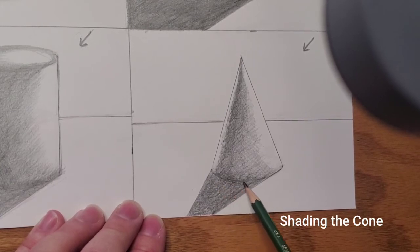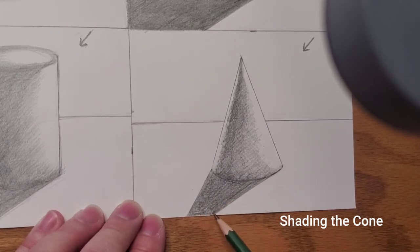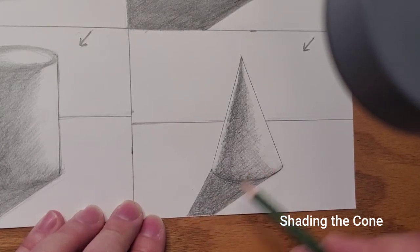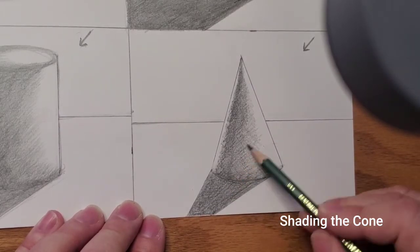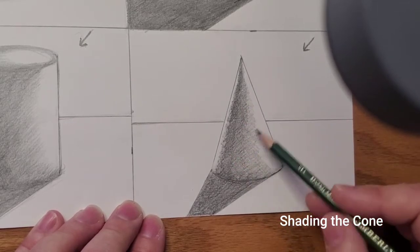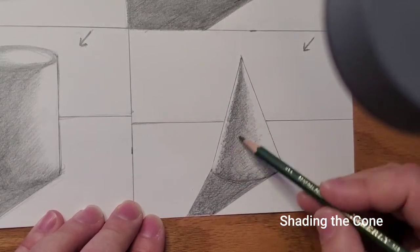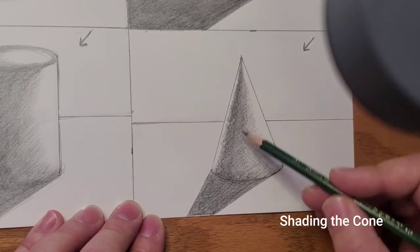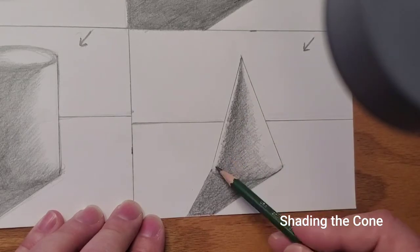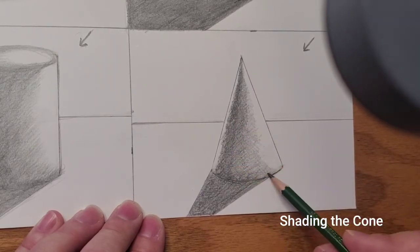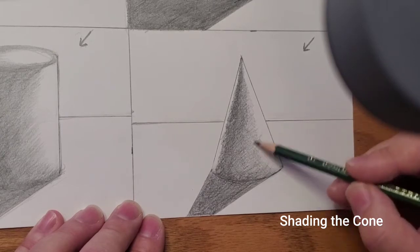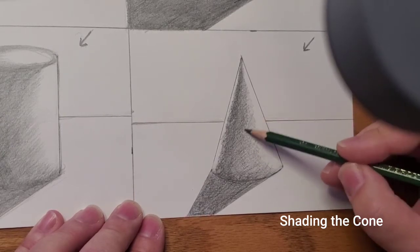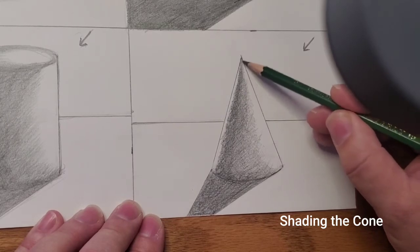If you start to lose the edge of your form, redefine it. You don't want to lose that in the shadow—you want the shadow and the form to remain separate. If your values change too suddenly and you start to see lines between the values, just continue to use your pencil. Go over it lightly in those areas. Feathering once again, one direction, lift your pencil point up off the paper.